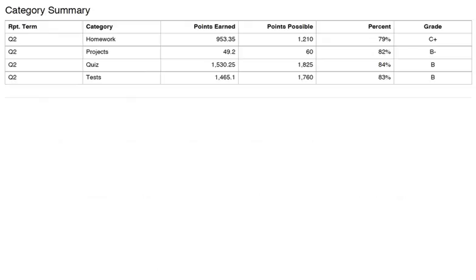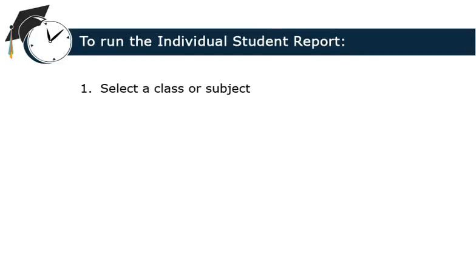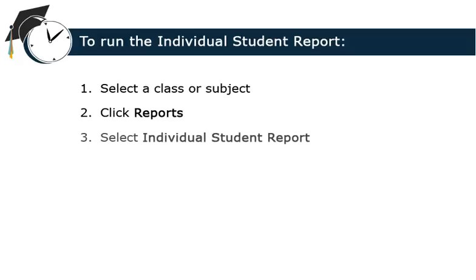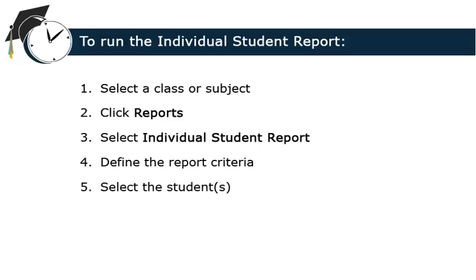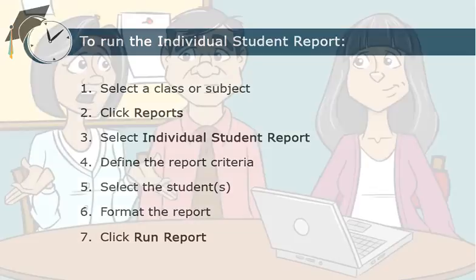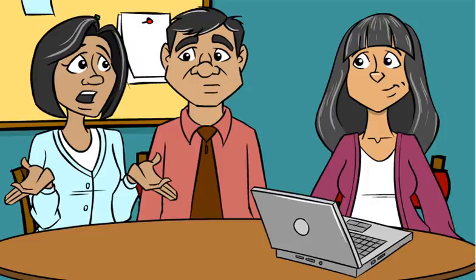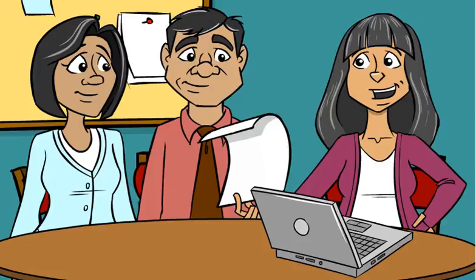Now you can print the report for the meeting. Remember, to run the individual student report: select the class, then click Reports and select Individual Student Report. On the Criteria tab, define what information will appear on the report. Select the students you would like to run the report for on the Students tab. On the Format tab, configure how the data will appear. Then click Run Report. You're ready for the meeting with Aaron's parents to discuss his challenges with math so that you can involve them in the remediation plan. And you'll be able to send the report home with his parents so that they can review his math scores in detail.